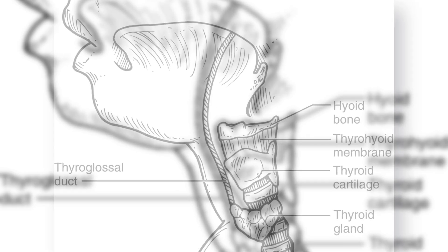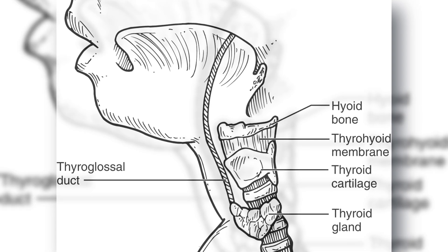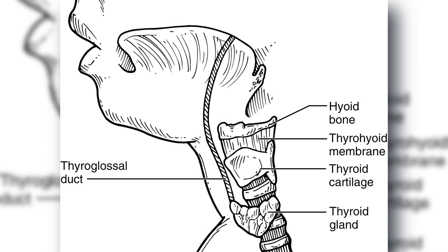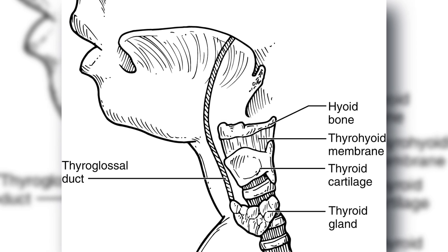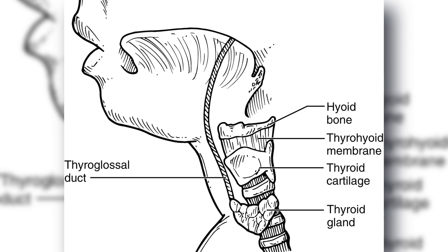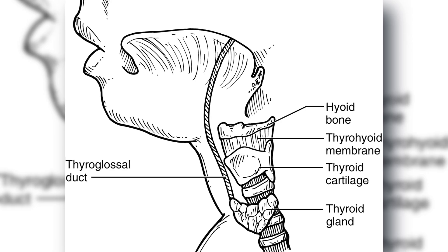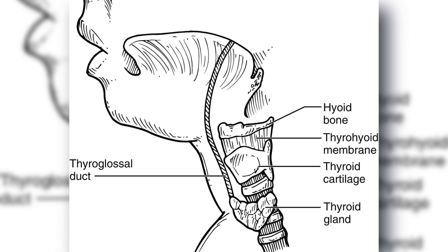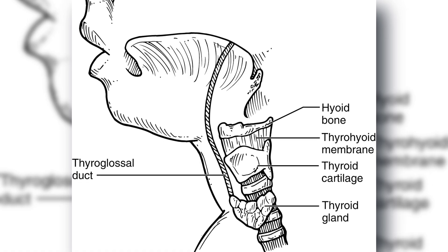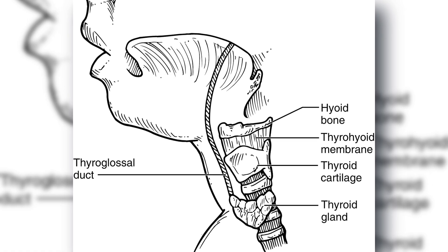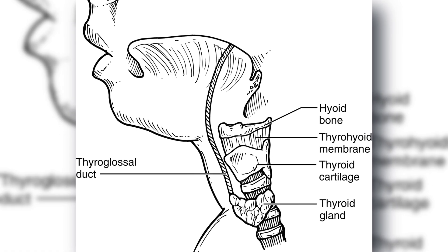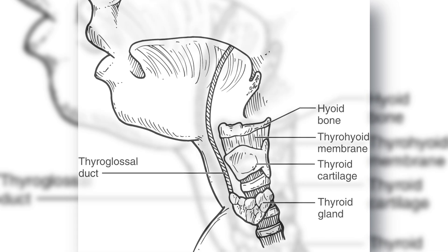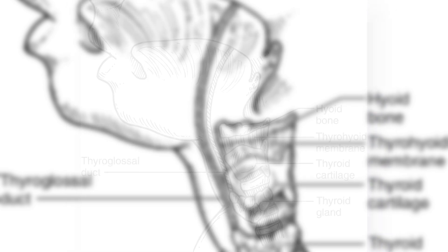Embryologically, the thyroid gland originates at the foramen cecum in the third gestational week. By the seventh week, it descends along the thyroglossal duct to reach its final position anterior to the laryngeal cartilages. Involution of the duct occurs between the eighth and tenth weeks. Failure of this involution leads to cyst formation due to retained epithelial secretions.